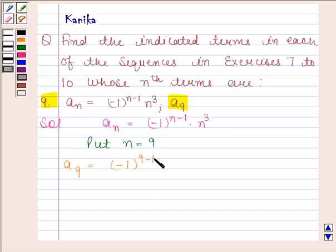This equals (-1)^8 * 9^3 = 729. Now, (-1)^8 = 1.